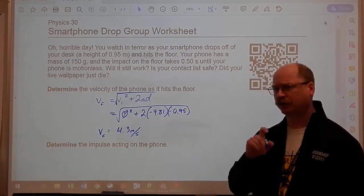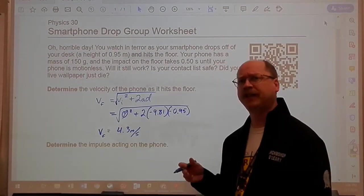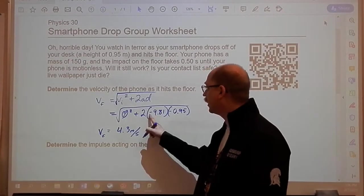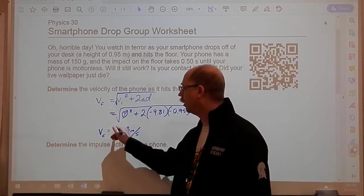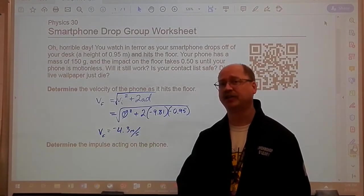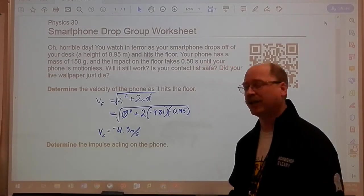Now just a little special note here though. The formula has a limitation. What we have to take into account is the phone did fall. It's going downwards. So to stay consistent with our signs here, we also have to put a negative sign onto that answer. It's just kind of a limitation of the formula that it doesn't show that to us otherwise.